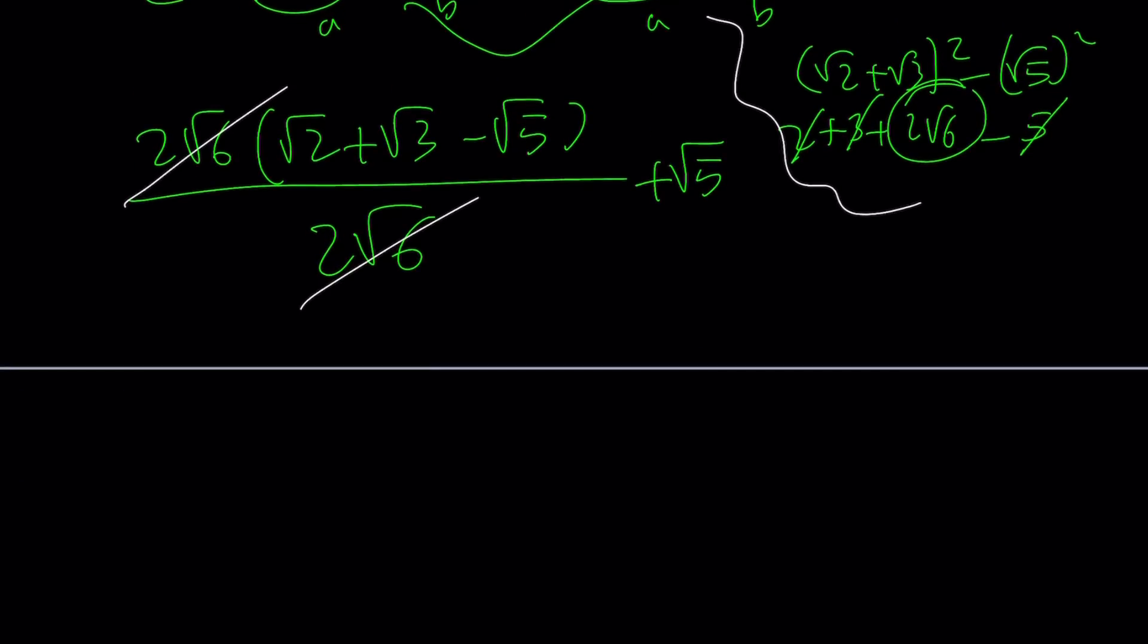Root 2 plus root 3 minus root 5 plus root 5. And the negative root 5 and the positive root 5 cancel out, leaving us with root 2 plus root 3 as the answer.